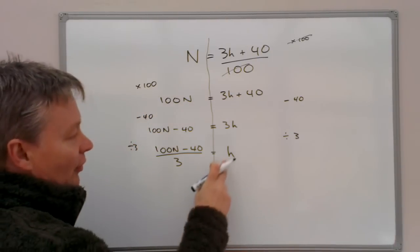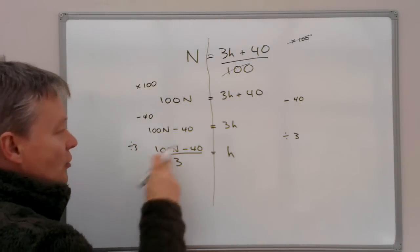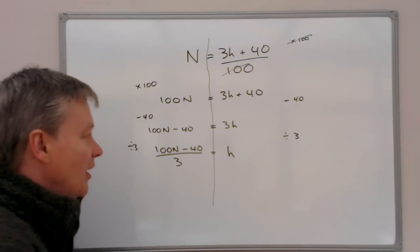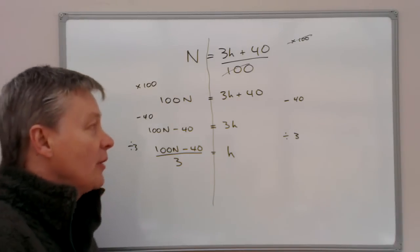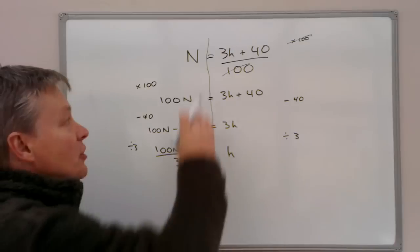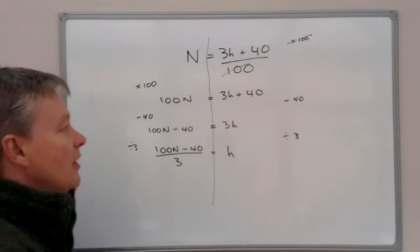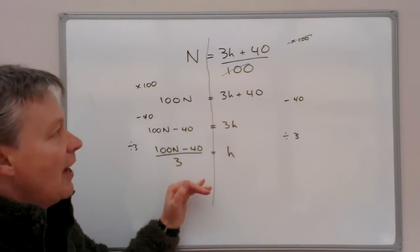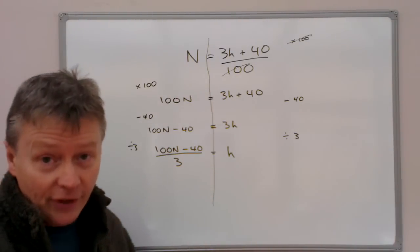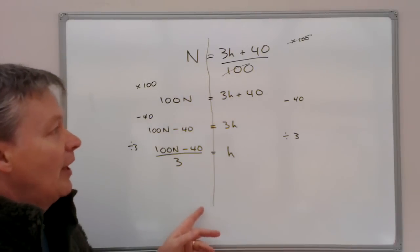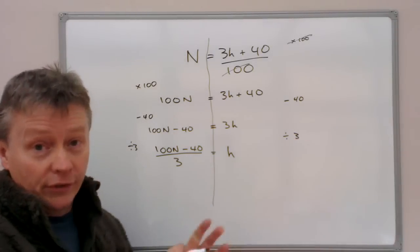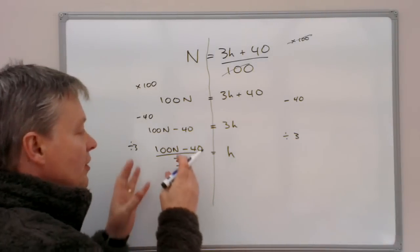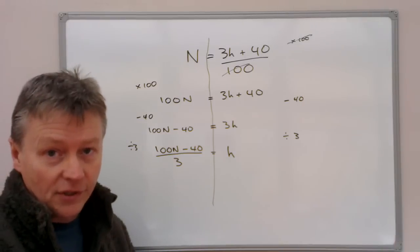So now I have an expression for H, which is 100N minus 40, all over 3. You might want to stop the video and just work your way through each of those different steps. I think the key factors are work down the page and also show the examiner each time what you've done in order to get to your end result.